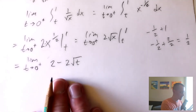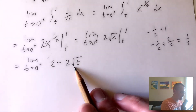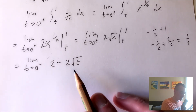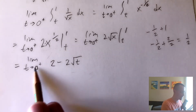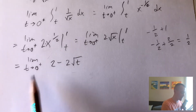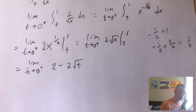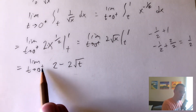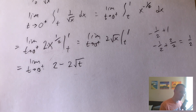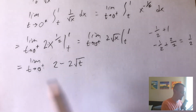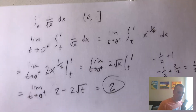Now we want to figure out what this limit is as T goes to 0 from the right. The function 2 times the square root of T is continuous for all T values 0 or more, so for all T values close to 0 but greater than 0. Since it's continuous from the right, we can just plug in 0 for T, giving us 2 minus 2 times 0, which is 0. So we just get 2.